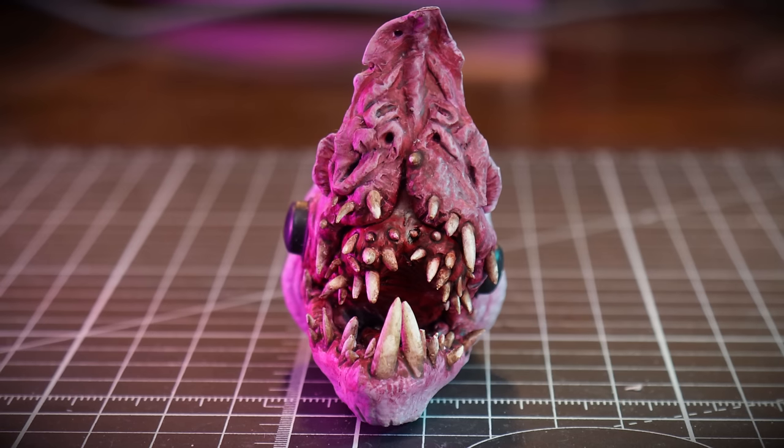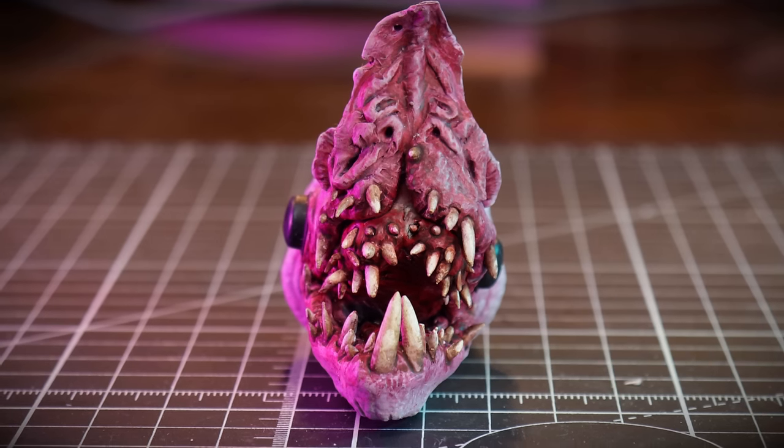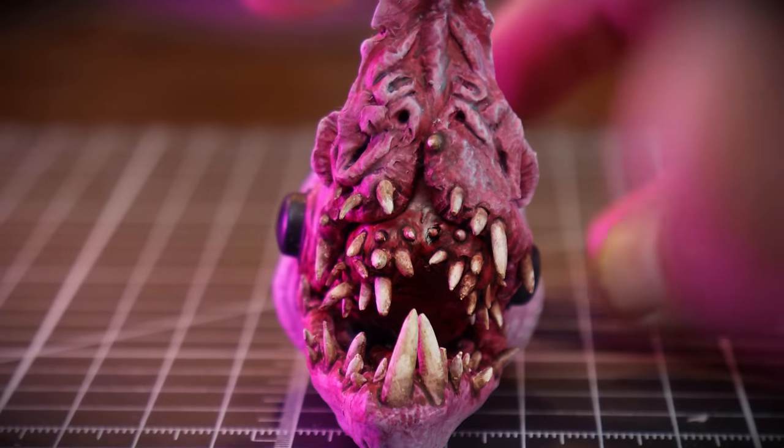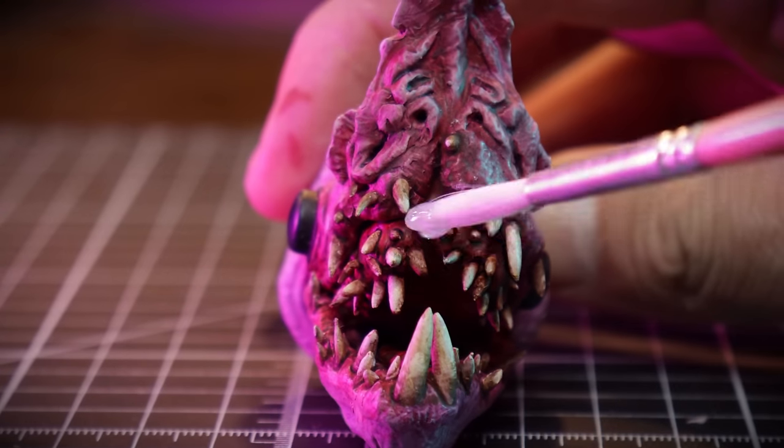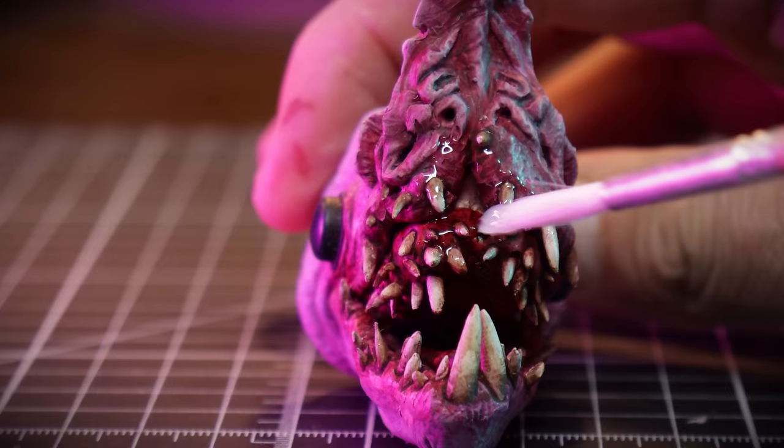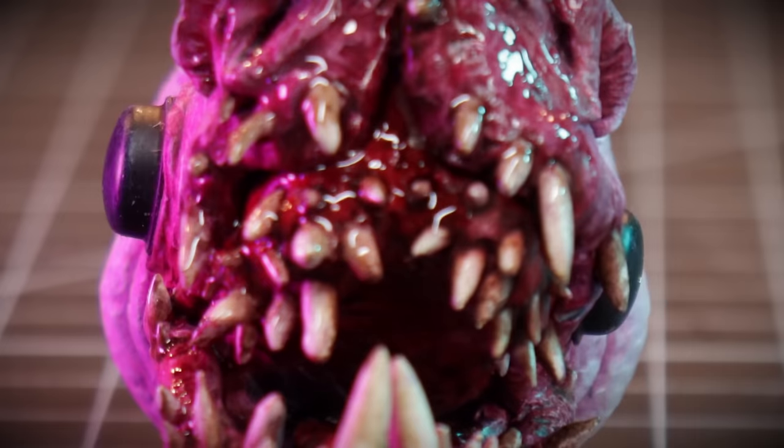And just to make these gums, the nose, and the teeth look extra gross, I'm going to use some UV resin. Get that slathered on and then it was actually quite sunny so I'll put it on the garden to cure. You know, I think I ruin a brush every time I use UV resin. No matter how much you try to clean that brush, the resin stays in the bristles and cures.